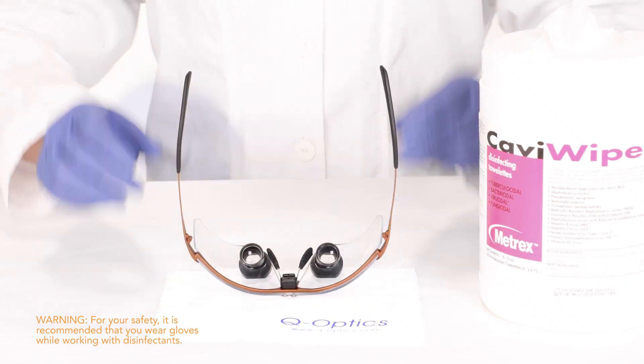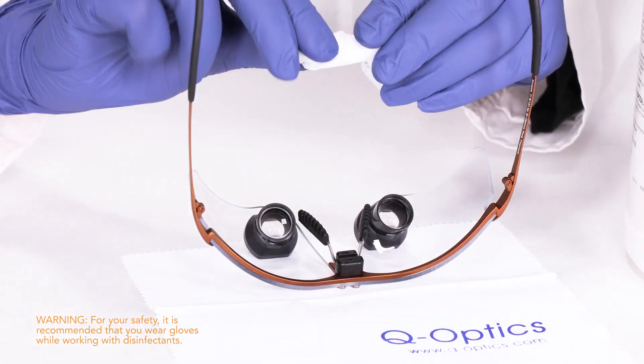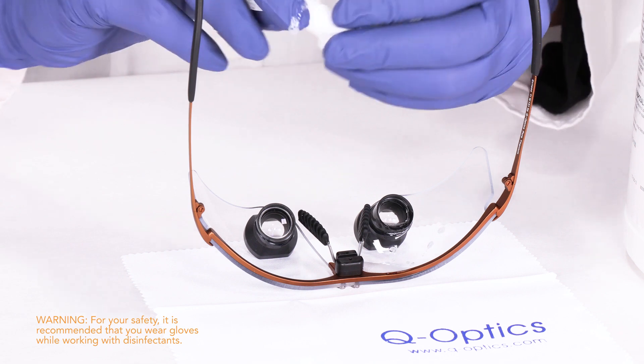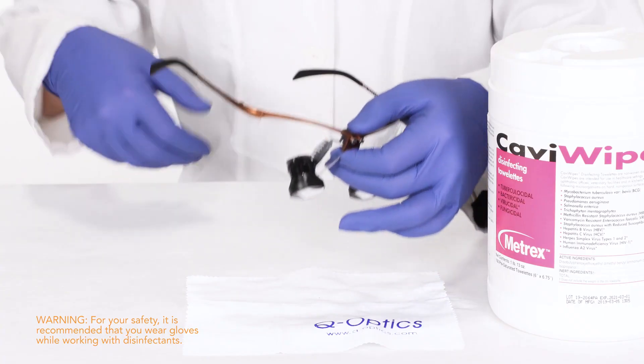Cavicide or Virex can also be used for disinfecting and are safe to use on your loops. If using disinfecting wipes, you can choose to wring out the excess solution onto your lenses then wipe with a lens cloth.